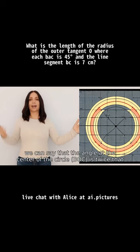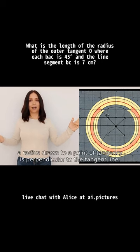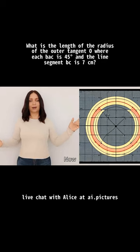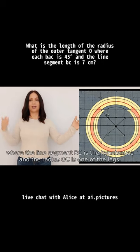In a circle, a radius drawn to a point of tangency is perpendicular to the tangent line. Now we have a right triangle BOC where the line segment BC is the hypotenuse and the radius OC is one of the legs.